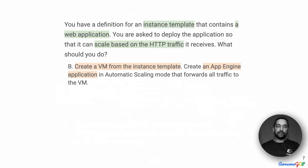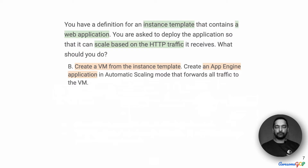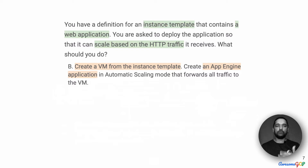How about option B? It suggests creating a VM from the instance template and then creating an App Engine application in automatic scaling mode that forwards all traffic to the VM. Already we are thinking: what does it mean to forward all traffic to the VM? It's not going to be just one VM — we want multiple VMs, and this solution suggests we have to create a VM for each of them.